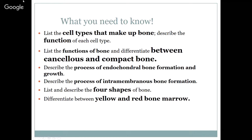So what are you going to need to know? We want to list the cell types that make up bone and describe the function of each of those cell types. We're going to list the functions of bone and differentiate between cancellous bone and compact bone. We're going to describe the process of endochondral bone formation and growth — how do the bones grow and animals get bigger — and the process of intramembranous bone formation. We're going to describe the four shapes of bone and differentiate between yellow and red bone marrow, which you should already know the difference between.